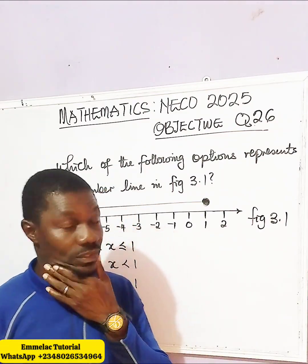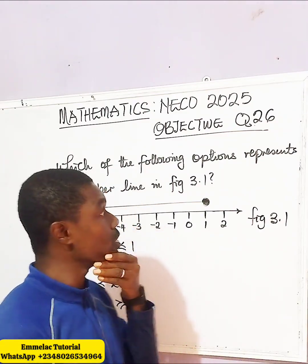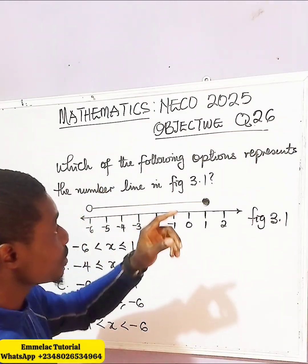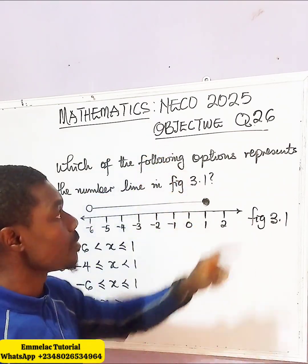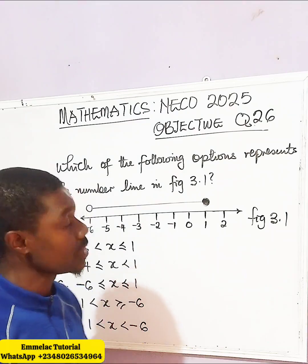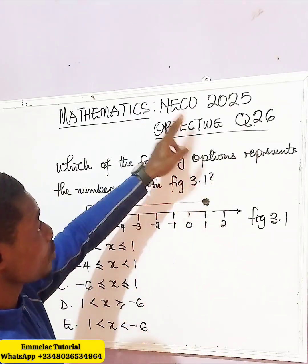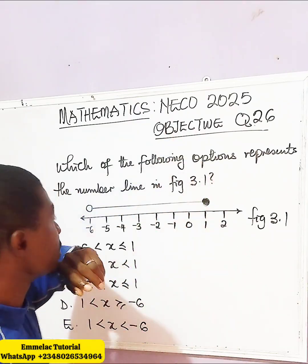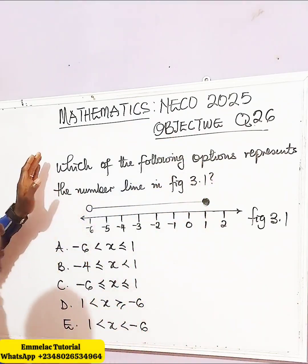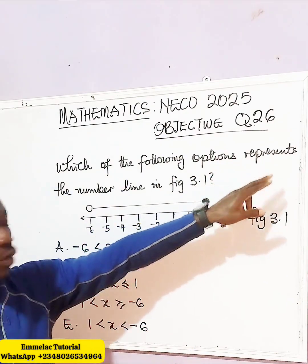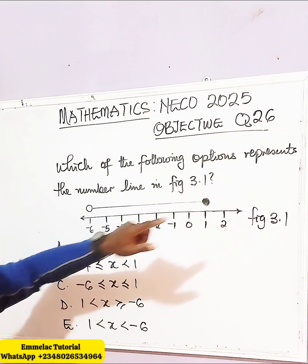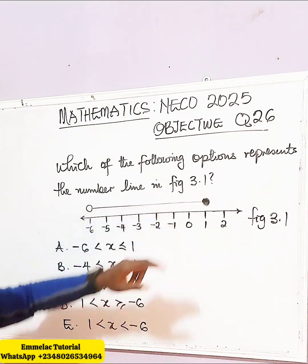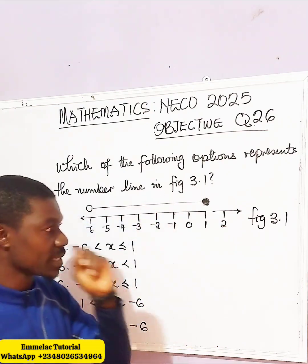Welcome to MelaConline tutorial. Let us look at question number 26 of NECO 25 objective, question 3: which of the following options, here are the options, represents the number line in figure 1.3.